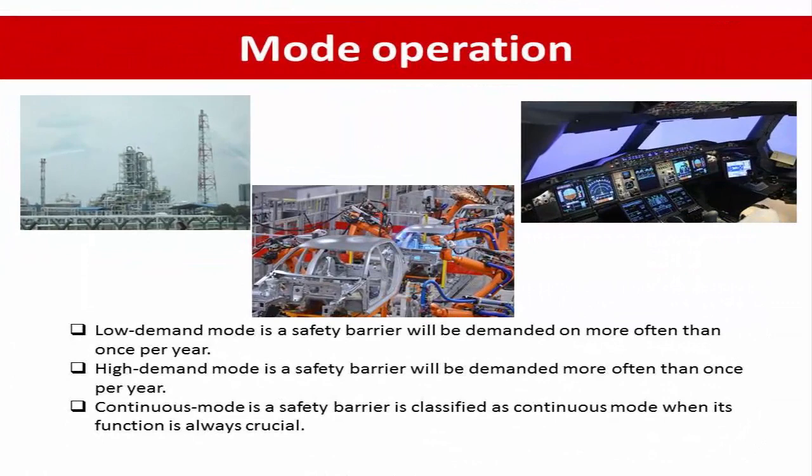Mode of operation: safety barriers may be categorized according to how often the barrier functions are demanded. They are separated into three demand modes depending on the frequency of activation of safety functions per year. The first is low demand mode, where a safety barrier will be demanded no more than once per year. For example, the airbag system in a car is considered a low demand mode safety barrier.